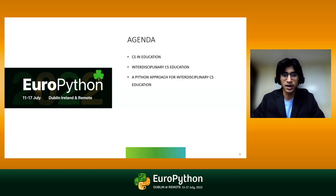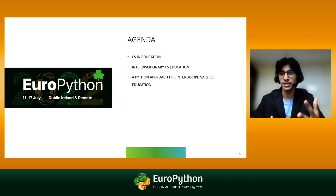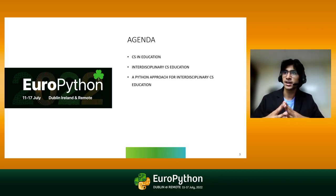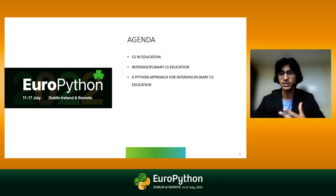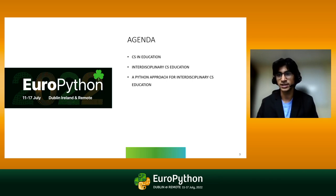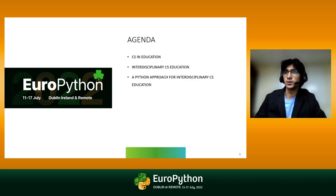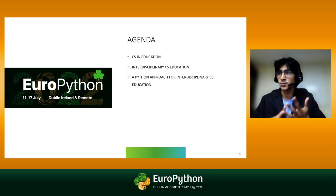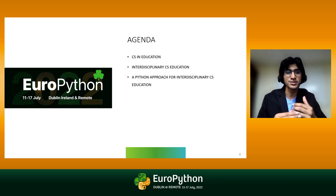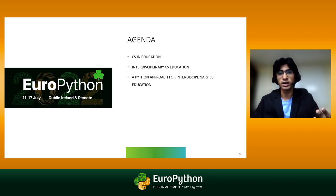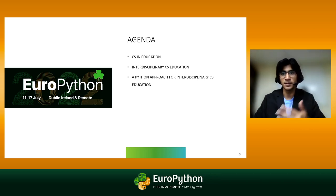A quick agenda: I'll start with a general introduction of computer science within education — the current state and the Python aspect. After that, we'll touch on interdisciplinary computer science education, discussing why it's important and what's missing in interdisciplinary computer science coursework right now. Then we'll look at a Python-based approach we took for interdisciplinary CS education, and how we hope these steps will motivate future advancements in developing more co-curricular coursework with computer science.